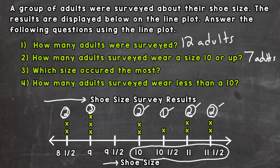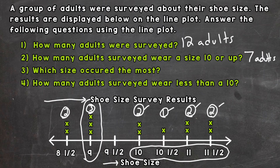Number three: which size occurred the most? We look at which size has the most X's above it. Size nine has three people that wear it — that is the most occurring size. So the answer is size nine.